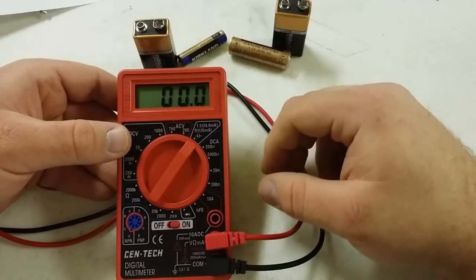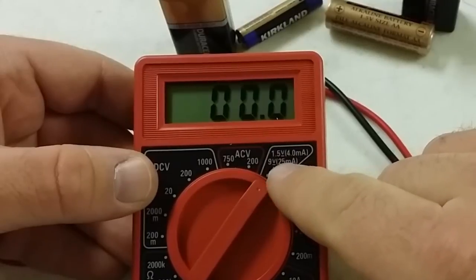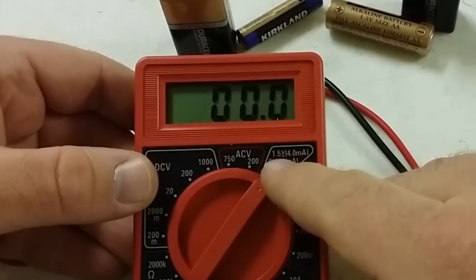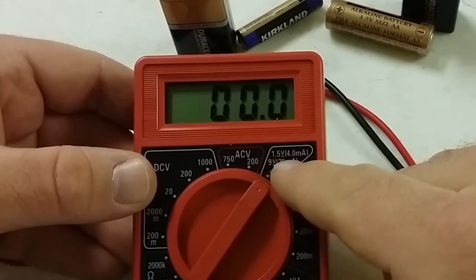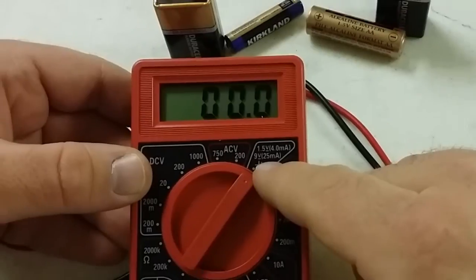So the first thing you'll want to do is set your multimeter to the battery setting, which is 1.5 volts or 9 volts. This tells you that if it's a 1.5 volt battery, which is a double A and a triple A, that it should read 4 milliamps. If it's a 9 volt battery, it should read 25.